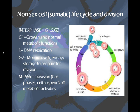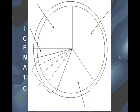After S comes G2. G2 is where there's energy stored to prepare for division. There's more cell growth and more normal metabolic function. G2 is represented here on this chart. All three of those stages — G1, S, and G2 — are called interphase.